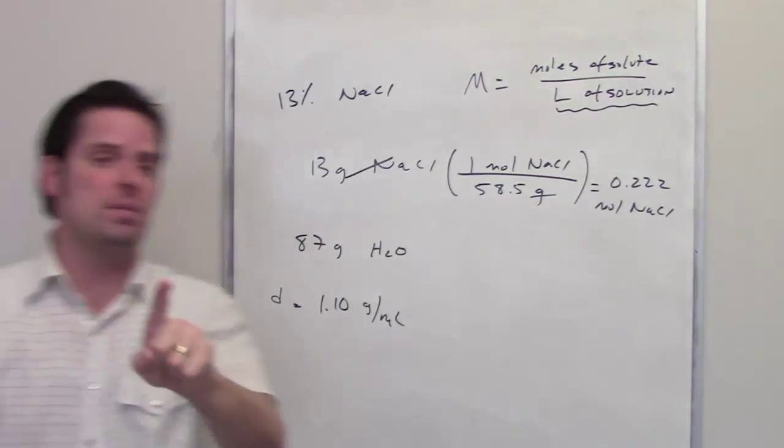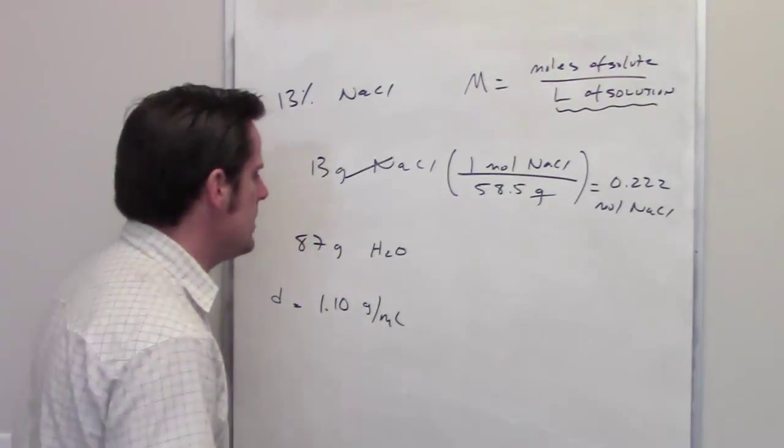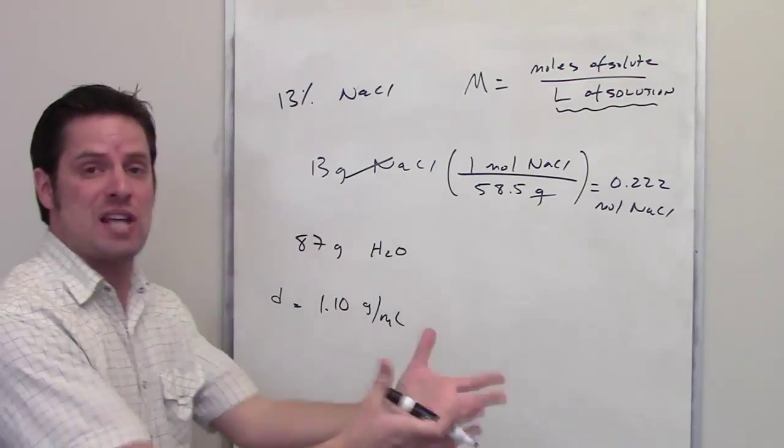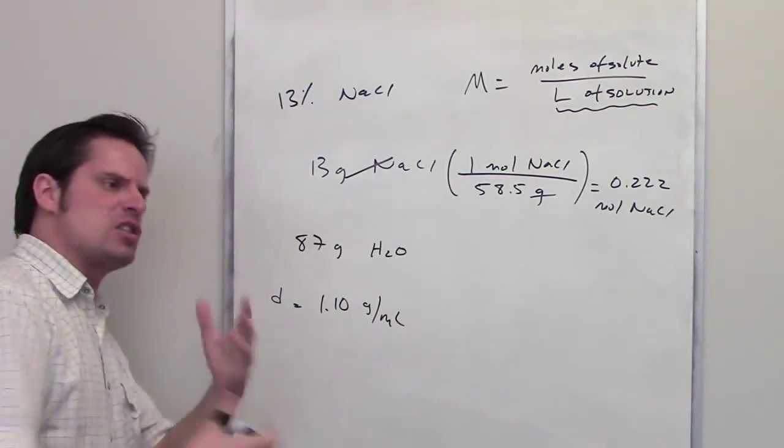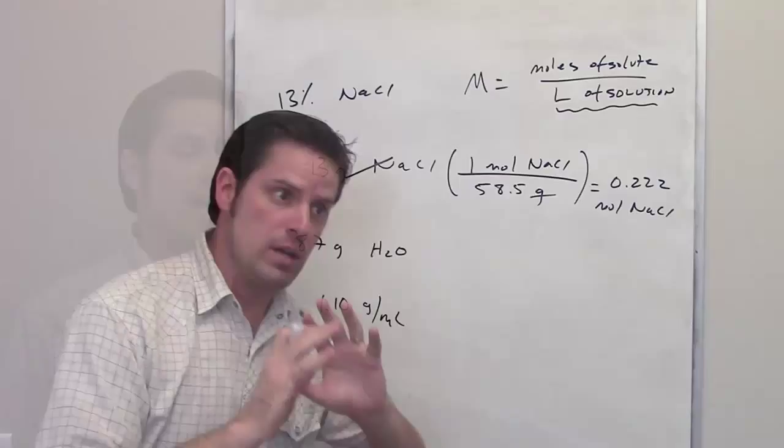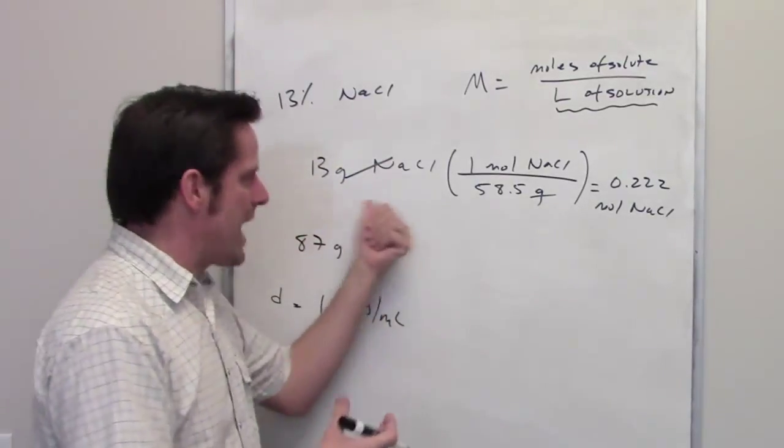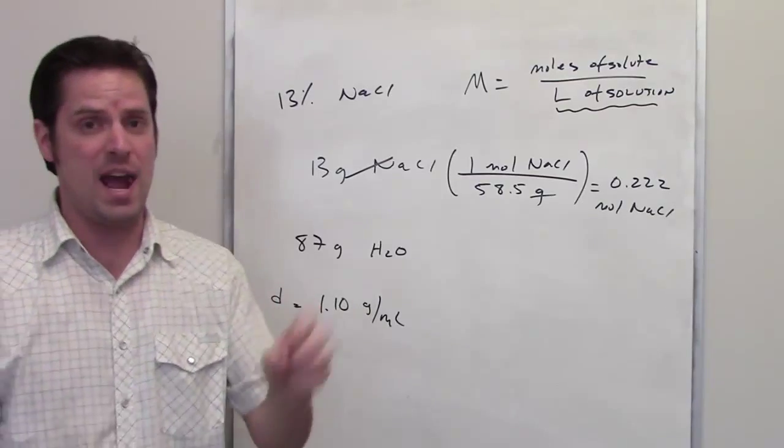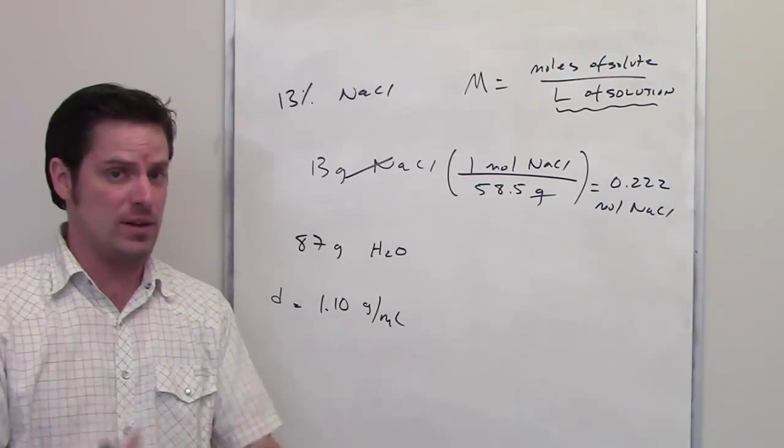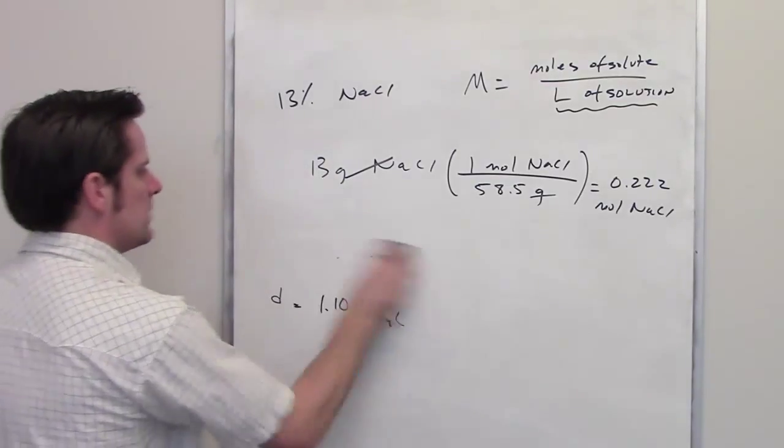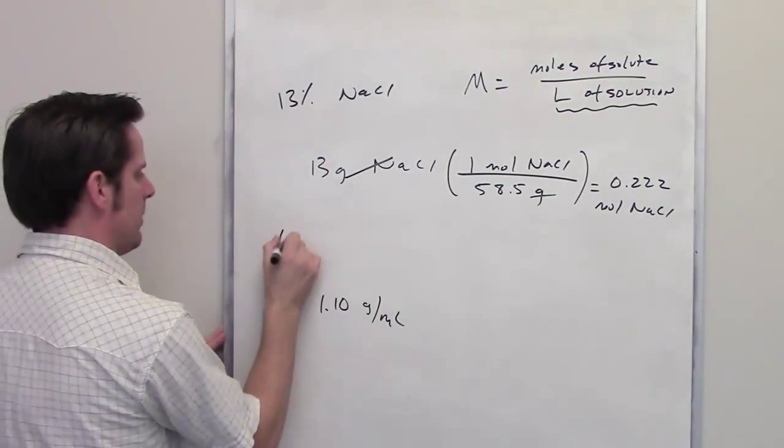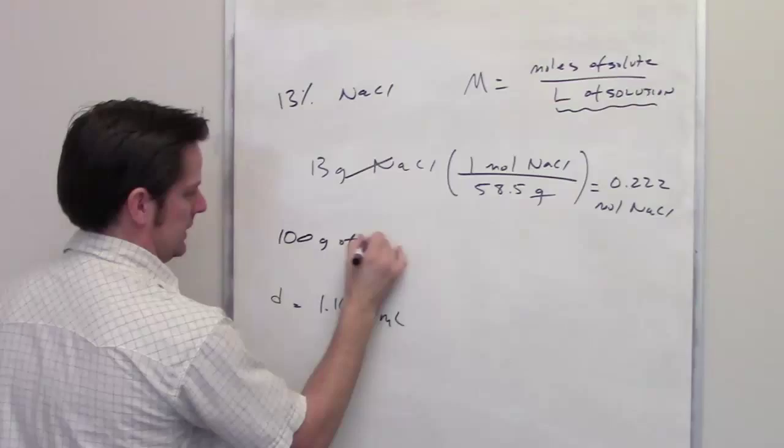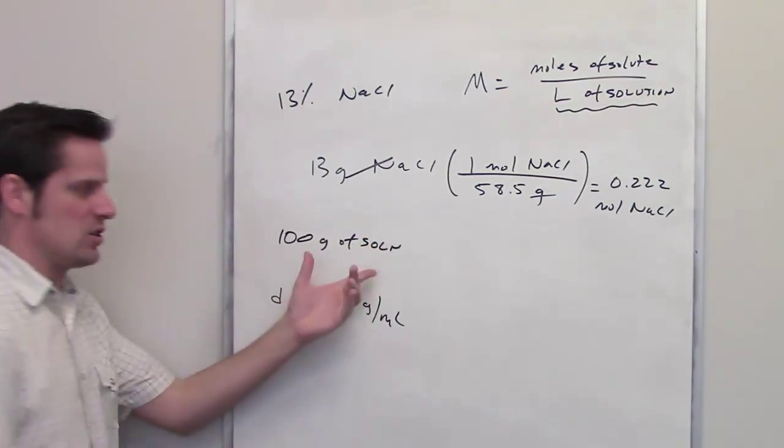So how do I calculate liters of solution? We go back to the beginning. We're supposing that we have a 100-gram sample of the solution. Because it's 13% sodium chloride by mass, we have 13 grams of sodium chloride in that solution. How much total solution do we have? Sodium chloride and water together - it's actually 100 grams. So I'm going to write down 100 grams of solution.